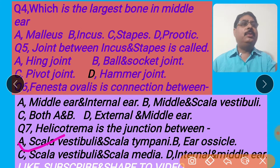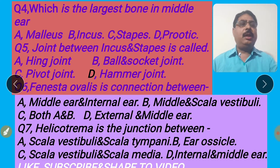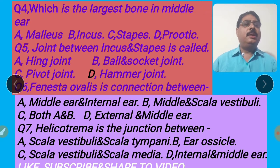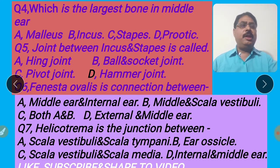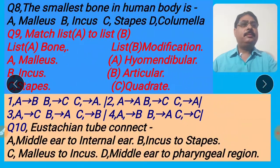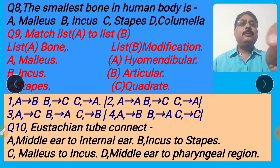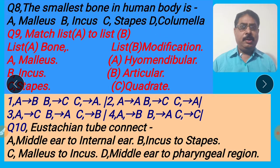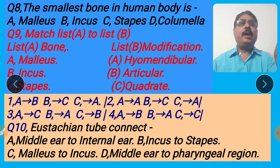Like, subscribe, and share this video — this is your work. I shall contribute to you by video, by MCQ, for NEET, AIIMS, TGT and PGT. Please do not forget your work — like and subscribe to the video. Please come to the next slide. Next question: The smallest bone in the human body — malleus, incus, stapes, and columella. Stapes is the smallest bone in the human body, present in the middle ear. So the right answer is option C. I shall click option C for the right answer.